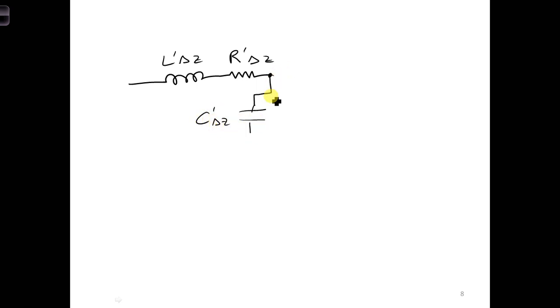But some of the signal may be lost through leakage current between the two conductors. That's a resistor. So this will have a conductance, G prime delta z.